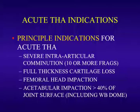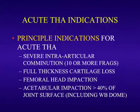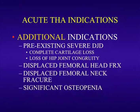The principal indications for acute total hip in an acetabular fracture are severe intra-articular comminution — 10 or more fragments, particularly in the weight-bearing dome — full thickness cartilage loss, femoral head impaction, and acetabular impaction, either of the dome or marginally impacted posterior wall greater than 40%. Basically, an elderly patient has a multi-fragmentary, destroyed acetabulum, and you look at it and say: I don't think I can reconstruct that.